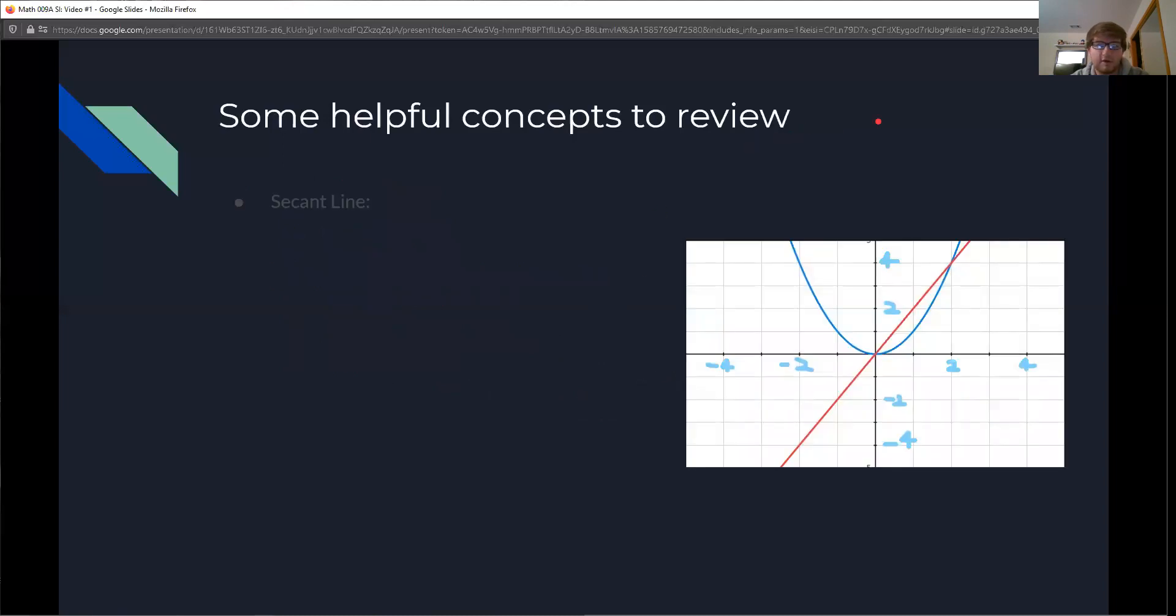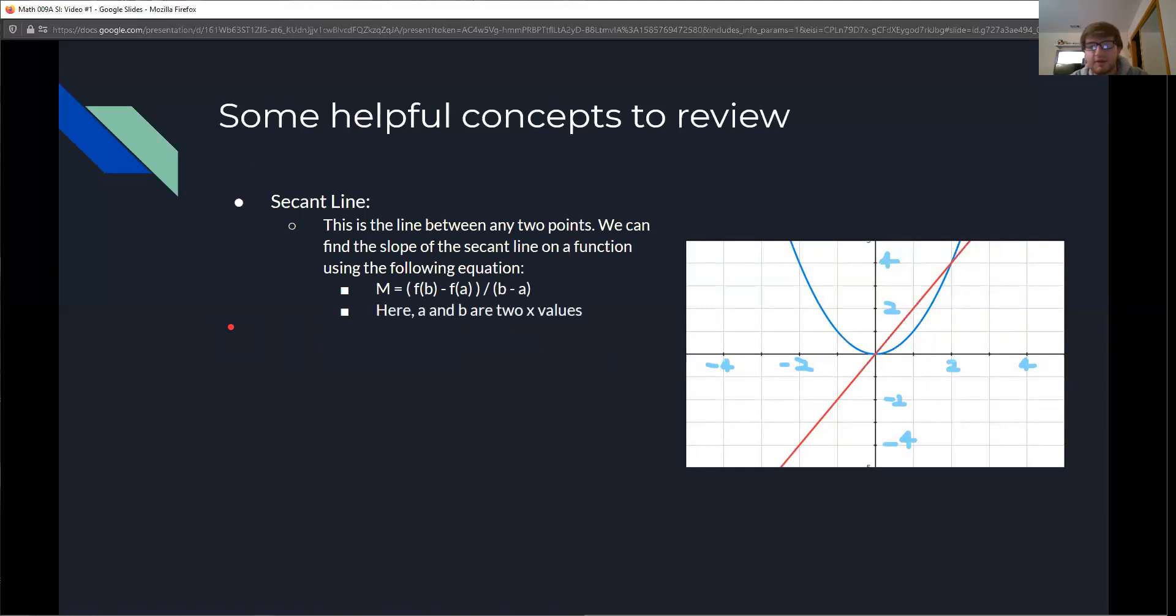Moving on, we have the secant line. This is going to be important really soon. This is a line between any two points. We can find the slope of the secant line on a function using the following equation: M equals f of b minus f of a all over b minus a. And here a and b are just going to be any two x values we choose. You may have noticed that this is going to be the same equation as just finding the slope of a line. This is like your y2 minus y1 over your x2 minus x1.